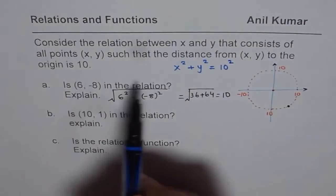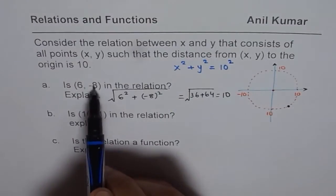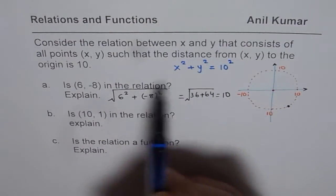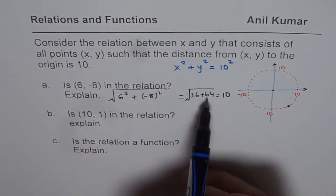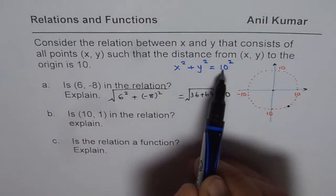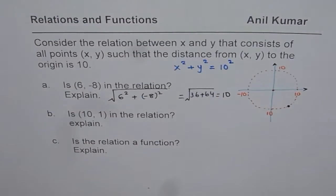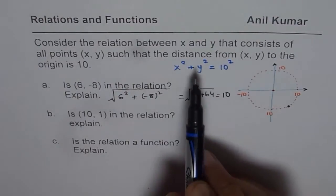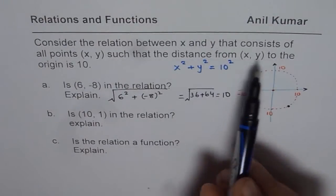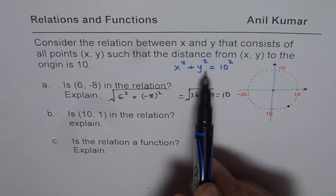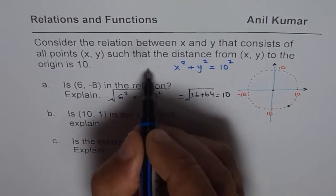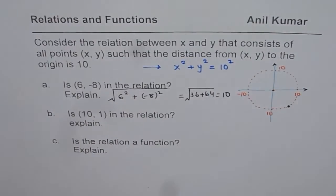If you substitute 6 here, 6² plus (-8)², you get 36 plus 64 which is 100 which is 10². That satisfies the equation also. If you are required to find the relation in the form of an equation, it may be a good idea to add this in your solution.